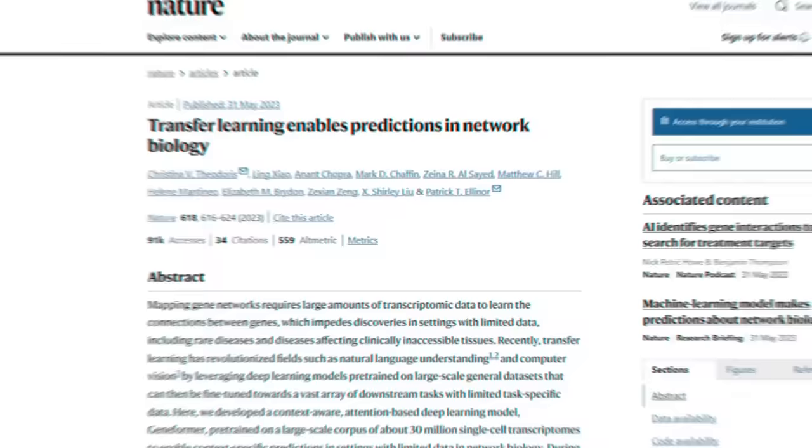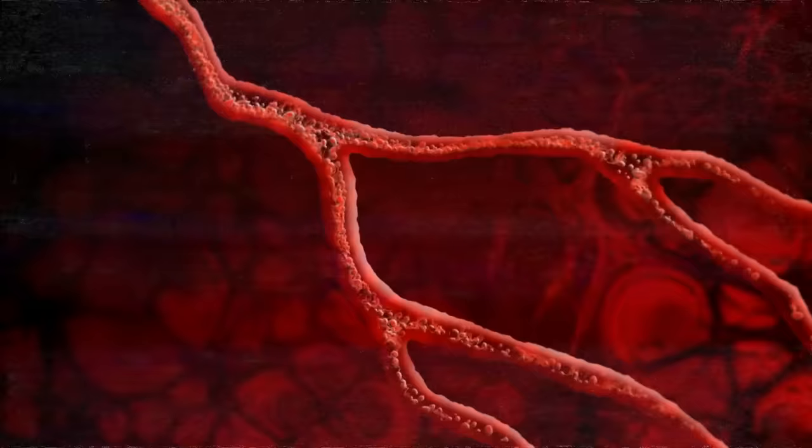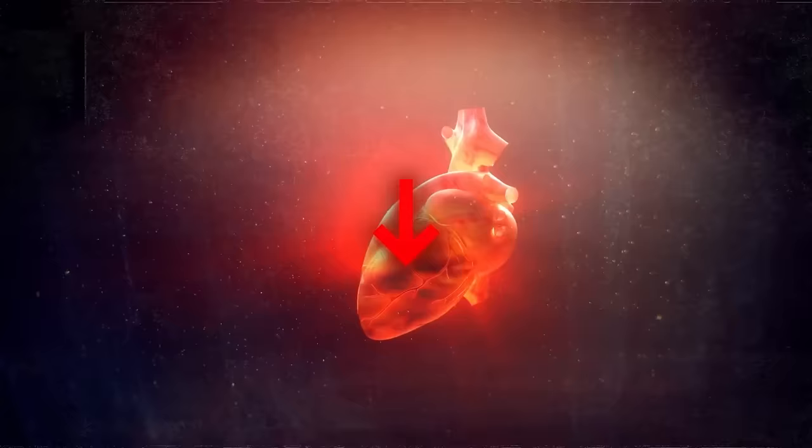The model acquired a profound comprehension of gene behavior across various cells. For instance, it predicted that deactivating a gene named TED4 in a specific heart cell type would cause significant disruption. When this prediction was tested on real heart cells known as cardiomyocytes, their ability to beat diminished.